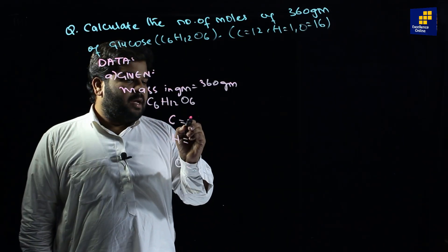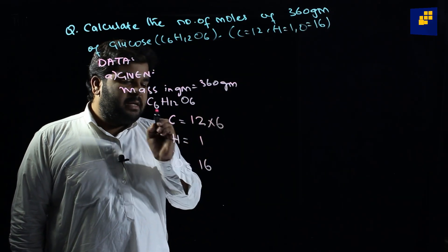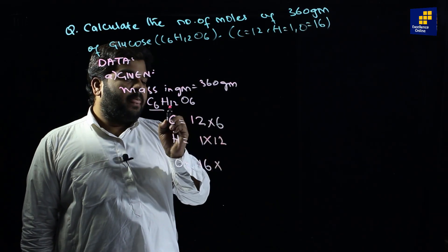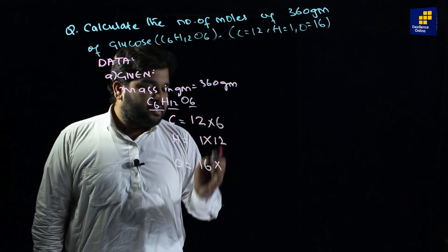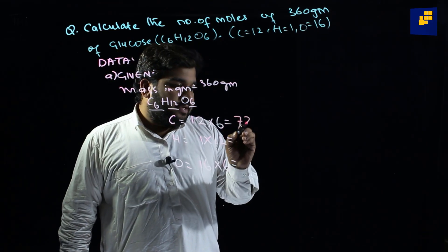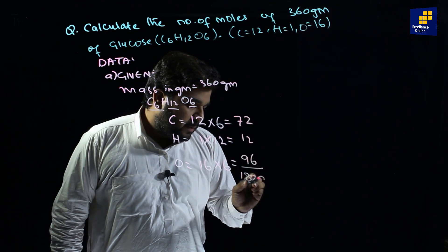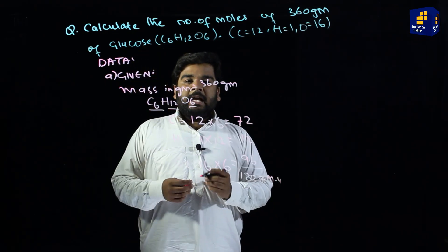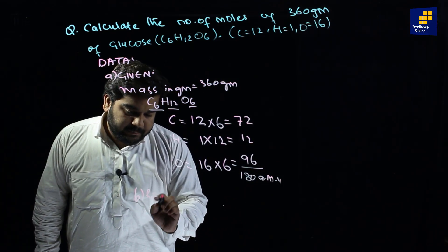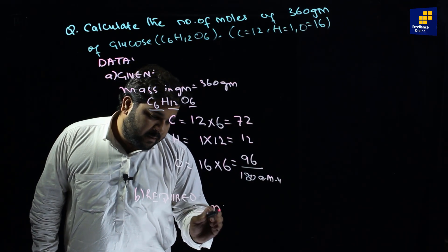C6H12O6 ka molecular mass calculate karte hain: carbon ka mass 12, hydrogen 1, oxygen 16. Carbon 6 hai to 6×12=72, hydrogen 12 hai to 12×1=12, oxygen 6 hai to 6×16=96. Jab combine karein to answer aata hai 180 amu.